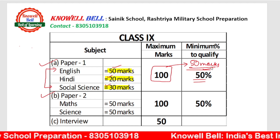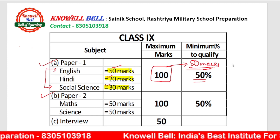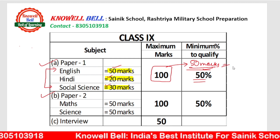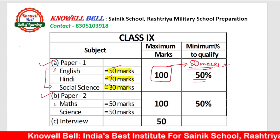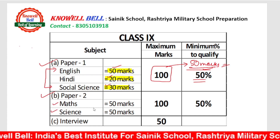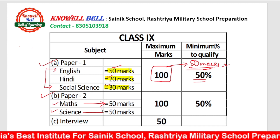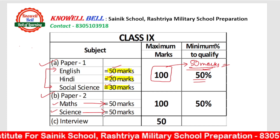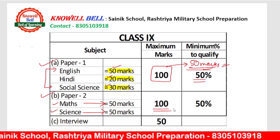In order to get into the merit list, you will need a higher score, but the minimum qualifying score is 50 marks out of 100. Paper 2 will contain two subjects — Maths and Science. In Maths, you will have questions for 50 marks, and in Science, you will have questions for 50 marks. The total marks of Paper 2 would be 100.